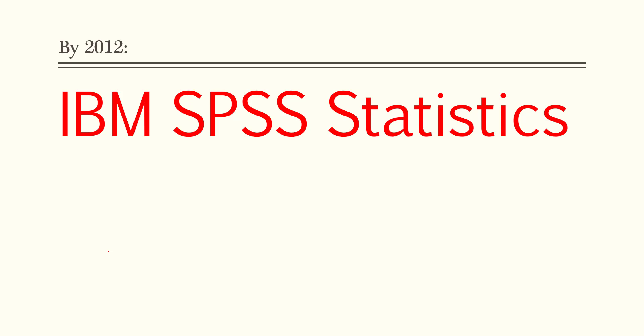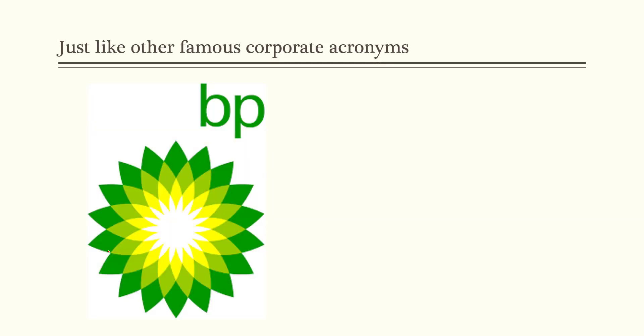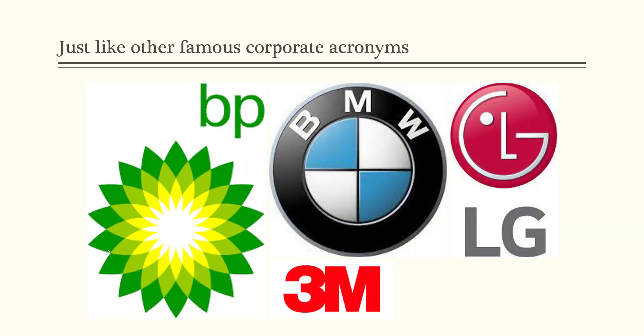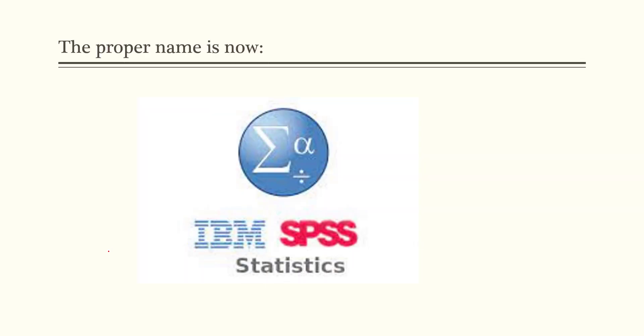By 2012, order was restored to the statistical world and the SPSS name was given back to IBM. IBM changed the name finally to IBM SPSS Statistics. So the name has become an acronym — there's no need to write out the full meaning because SPSS is just SPSS. It's now just an acronym like BP, 3M, BMW, LG, and IBM itself. The letters no longer stand for anything. SPSS is the name; it's not short for anything.